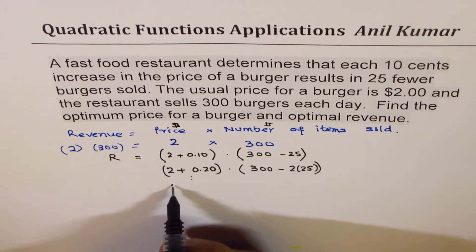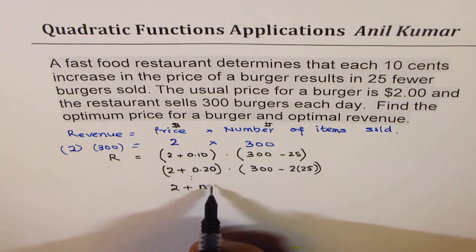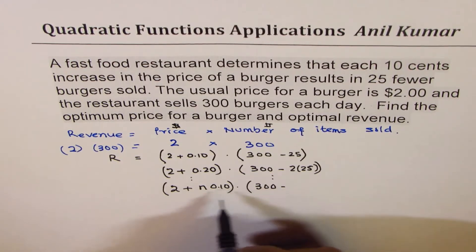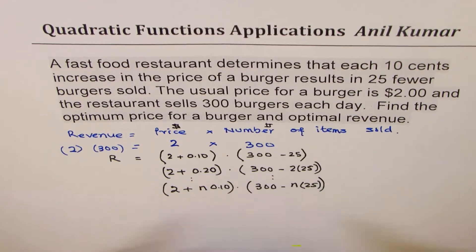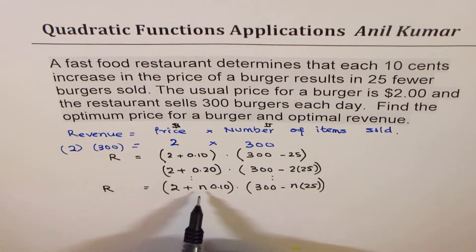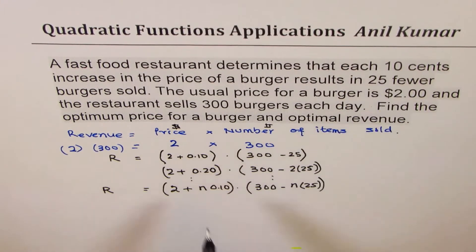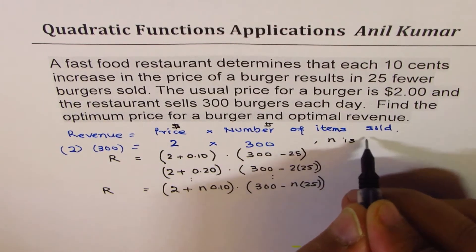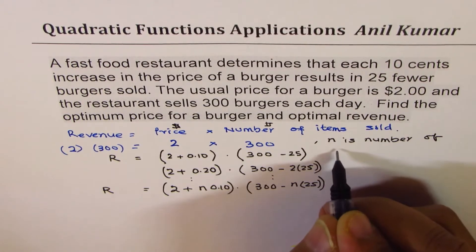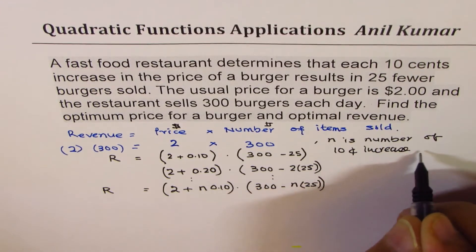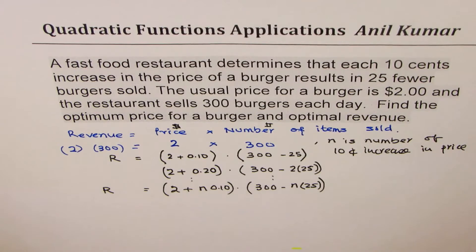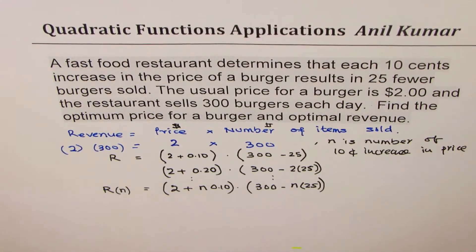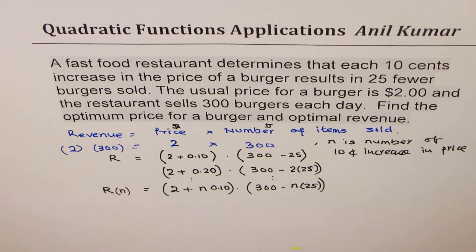So that means if I increase the cost by n times 10 cents, in that case the number of burgers sold will be much less. So that means 300 minus n times 25. So that becomes my revenue in terms of number of times, number of units of 10 cents. Where n is number of 10 cents increase in price. Now this equation is only in terms of R and n. So R is a function of n, number of times you increase 10 cents.